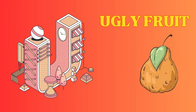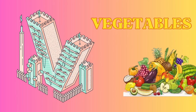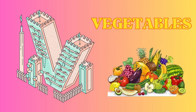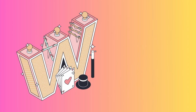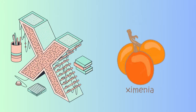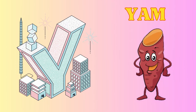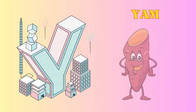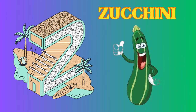U is for ugly fruit, ugly fruit. V is for vegetables, vegetables. W is for witloaf, witloaf. X is for ximenia, ximenia. Y is for yam, yam. Z is for zucchini, zucchini.